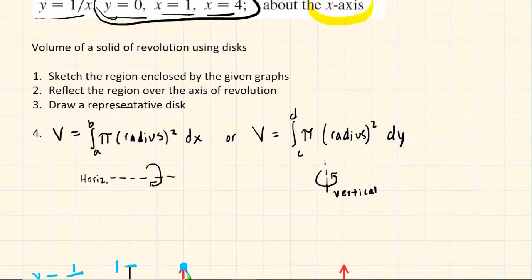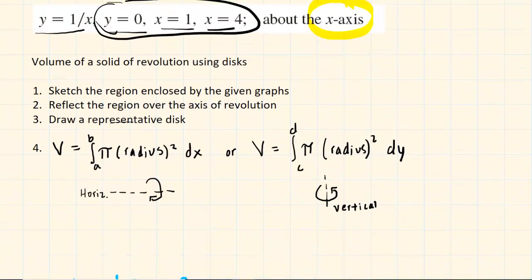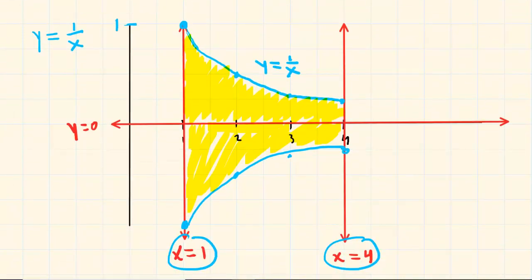In step three, we have to draw a representative disk. We come back down here, we can pick a point that lies somewhere in the middle of our region, so perhaps right about here. From that point, you're going to draw a circular disk. It's a three-dimensional disk, so we have to give it some depth here or some height. There is our representative disk.